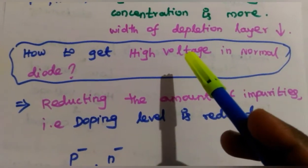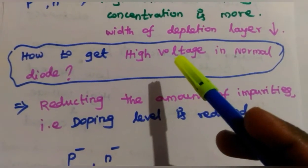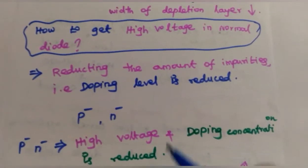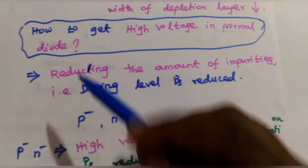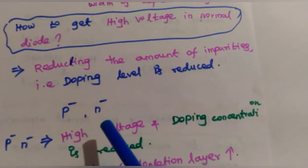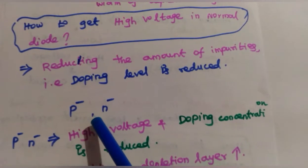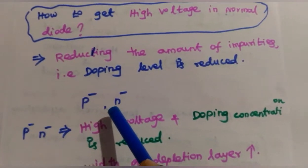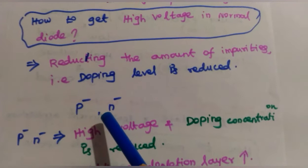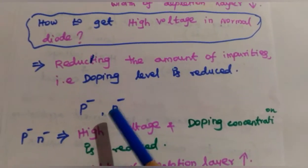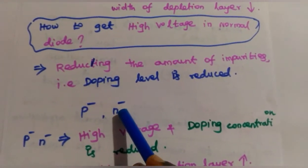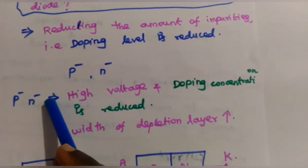To get high voltage from the normal diode, we reduce the amount of impurities — that is, we reduce the doping level in the P and N layers. Reducing impurities increases the depletion layer width, which increases resistance, so the voltage across the depletion layer is also more. The minus symbol represents reducing the doping level to obtain higher voltage.